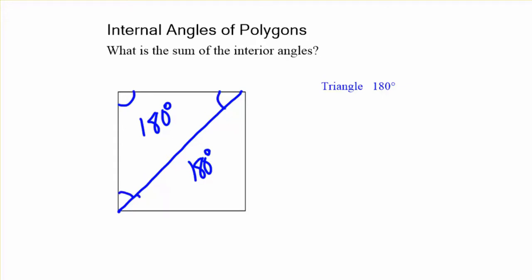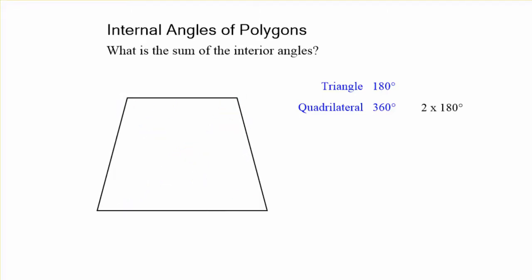Now, that plus that plus that equals 180, and these three angles add up to 180, so the total is going to be 360 degrees. That's two times 180 degrees for each of those triangles. And it doesn't matter what it looks like, a quadrilateral is going to give you two triangles.